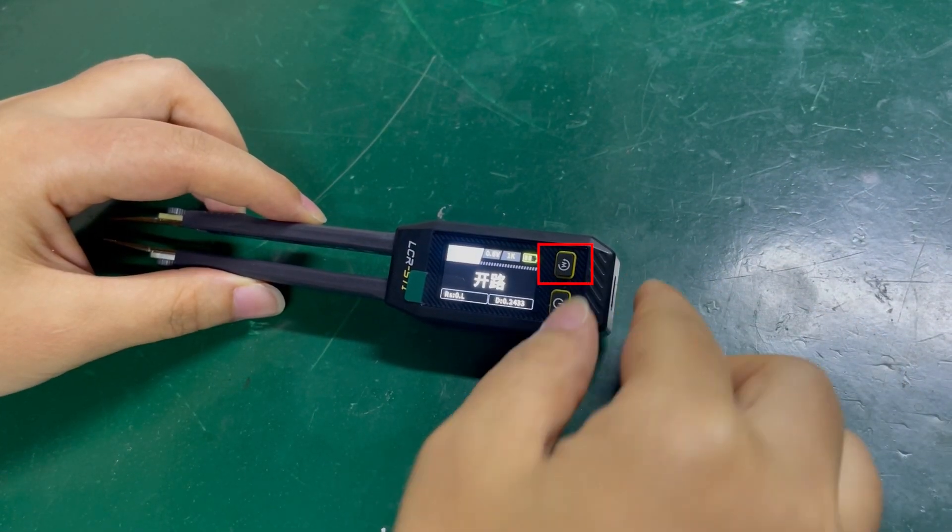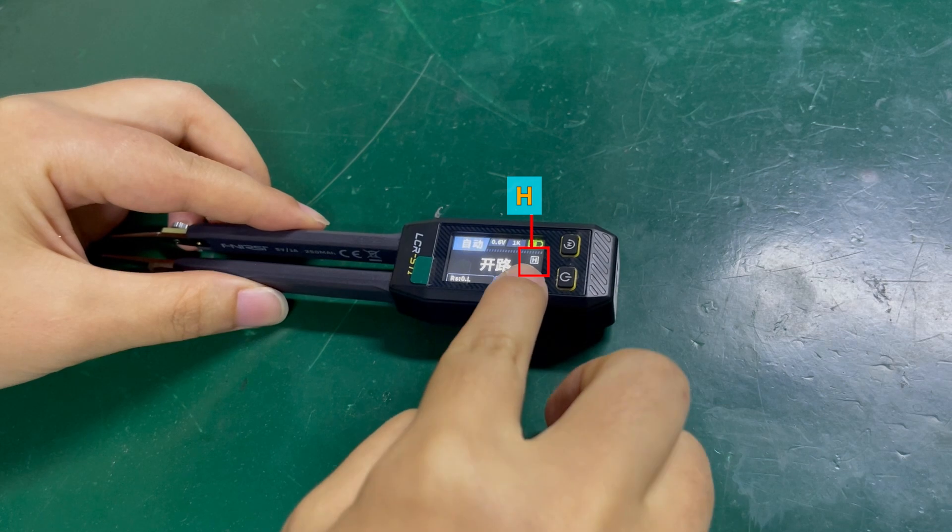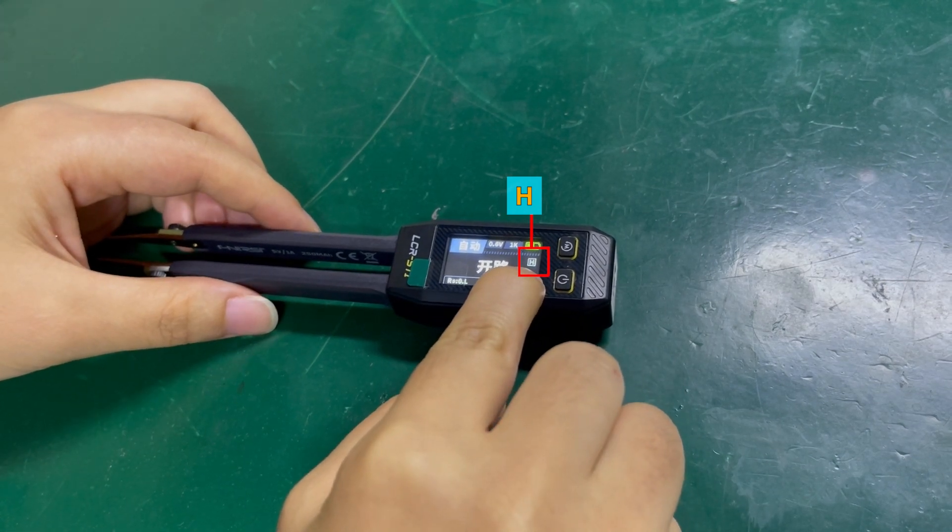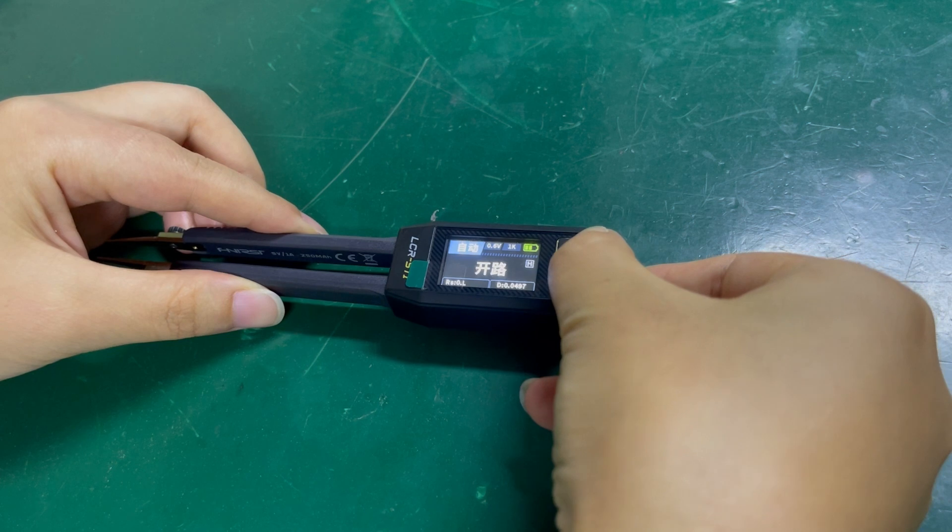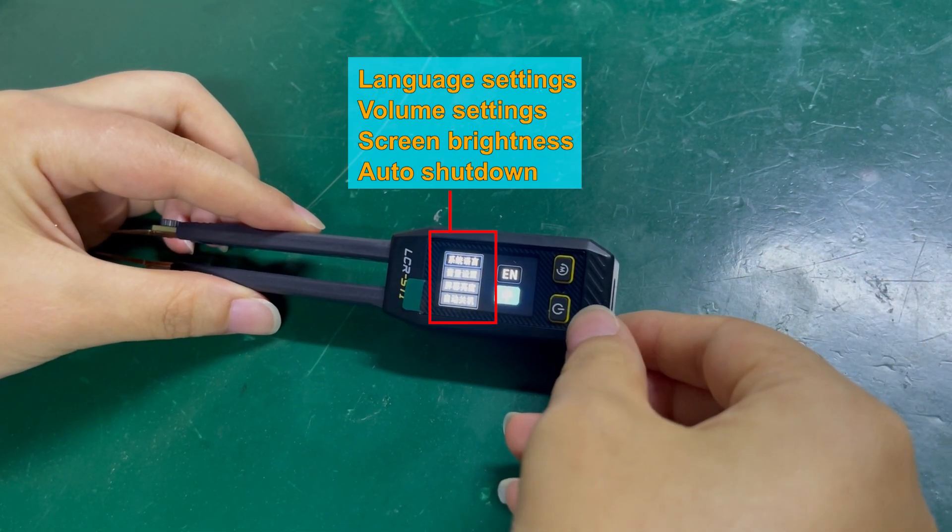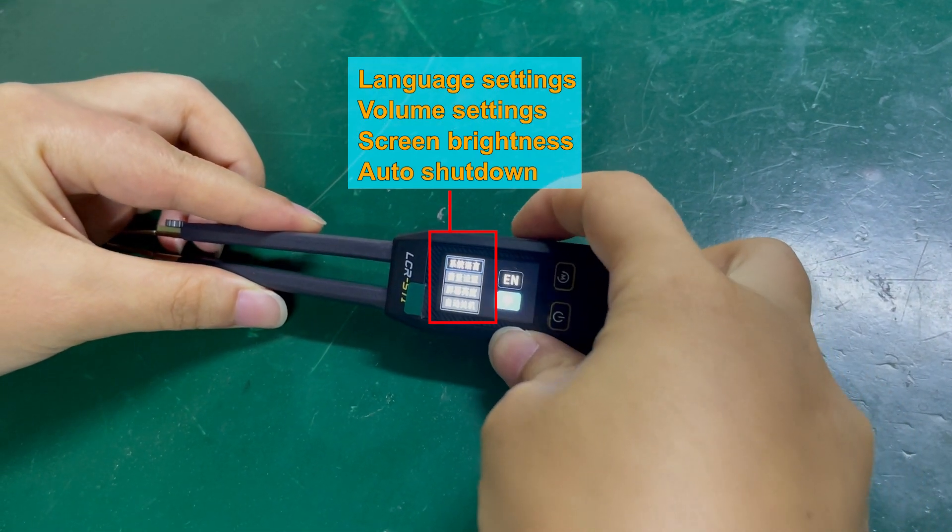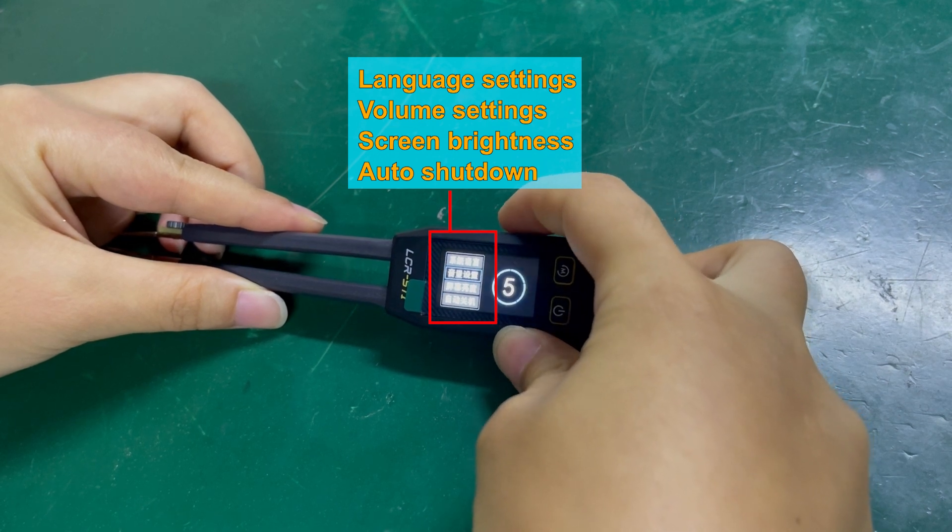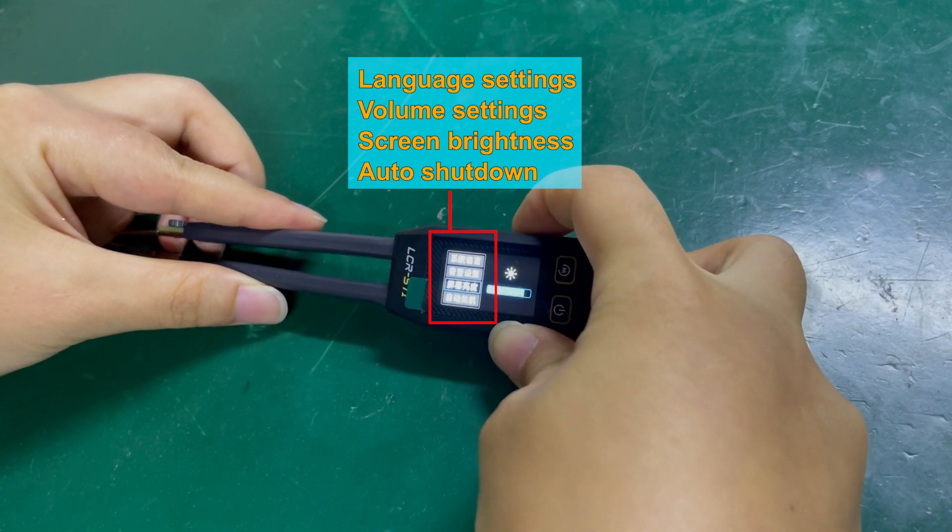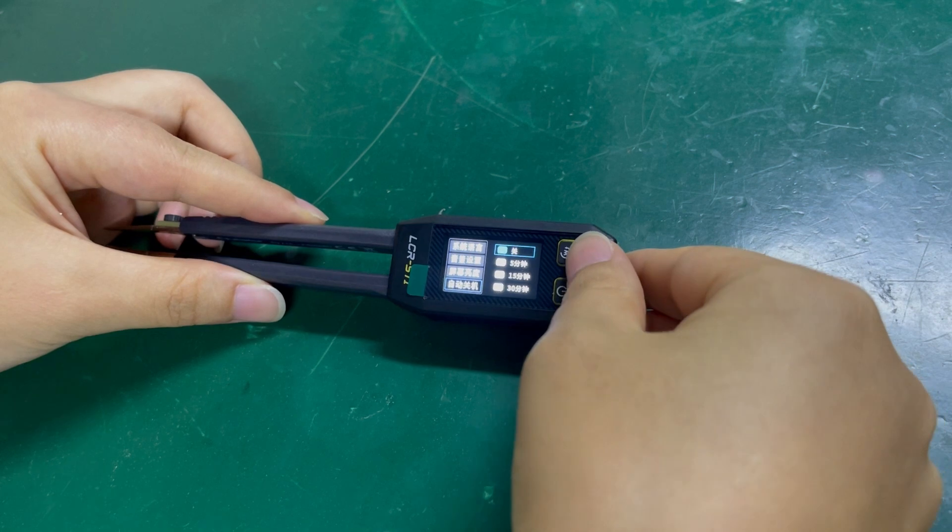Short press the W button briefly, and here it shows H, indicating data hold. A long press will enter the menu page, with language settings, volume settings, screen brightness, and auto shutdown. Press it again to return.